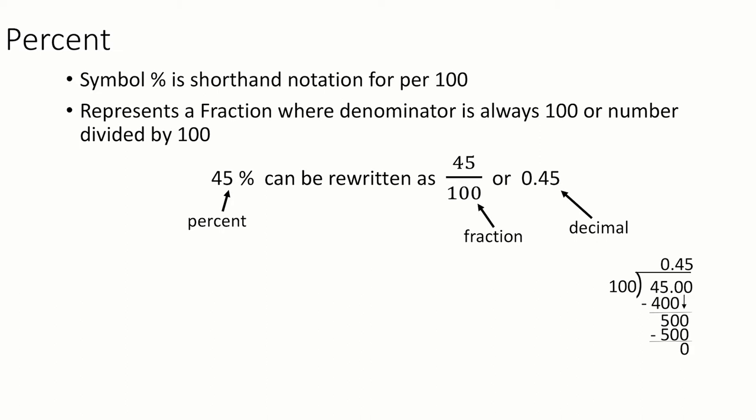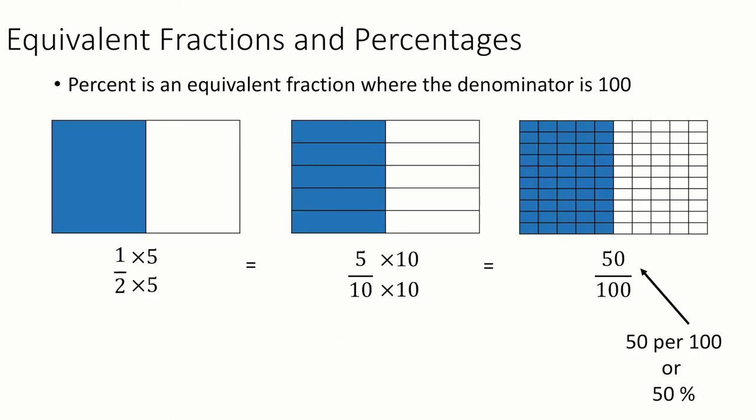You can see where the decimal would come from if you do the long division of 45 divided by 100. You can also take a percent as a fraction, 45 over 100, and reduce it to 9 over 20 by dividing top and bottom by 5. Fractions and percentages are very closely related because any equivalent fraction you can make to something over 100. So you can represent the same part of a whole using a percent pretty easily.